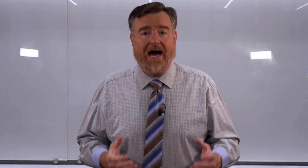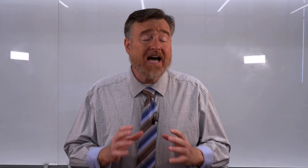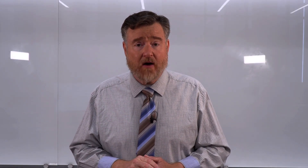The first is outliers. Parametric tests assume that there are no unusual or extreme scores in our data set — data points that could exert extreme influence or leverage over our data, and that could change the conclusions that we might otherwise draw.